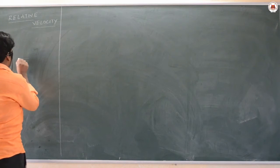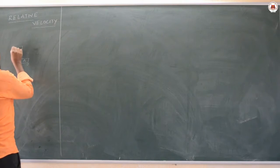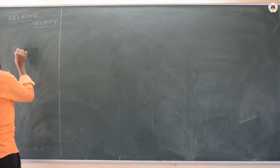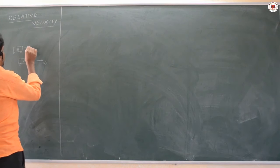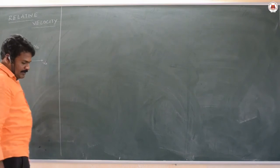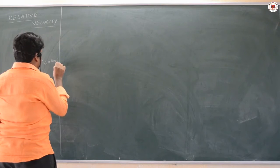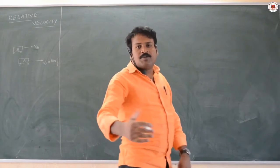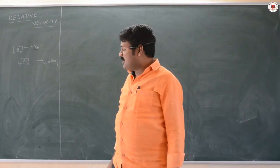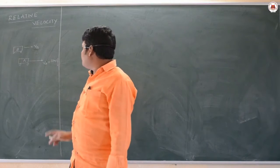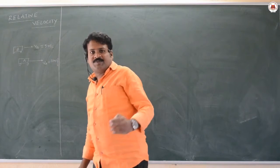Suppose there are two vehicles, vehicle A and vehicle B. The velocity of vehicle A is V_a and the velocity of vehicle B is V_b. If I say velocity of A is 10 meters per second and velocity of B is 5 meters per second, both are calculated with respect to the ground, because the ground is at rest.